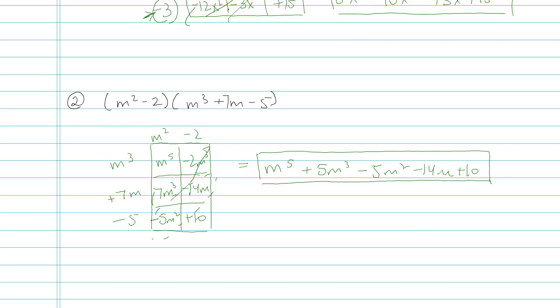I personally like this area model when you have a binomial and a trinomial because I think it's a nice way to organize your work. This is an alternative to distributing, which we'll have in another pencast. It's a way to visually organize your work that oftentimes helps students who are visual learners, kinesthetic learners, or if you have a geometry brain. This area model might be good for you for multiplying polynomials.